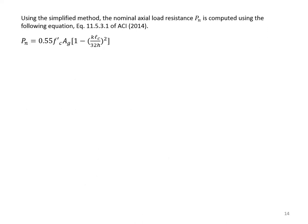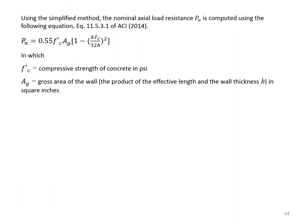Using the simplified method, the nominal axial load resistance Pn is computed using equation 11.5.3.1 of ACI 2014: Pn = 0.55·f'c·Ag × [1 − (KLc/32h)²]. In this equation, f'c is the compressive strength of concrete in psi, and Ag is the gross area of the wall (effective length × wall thickness h in square inches).